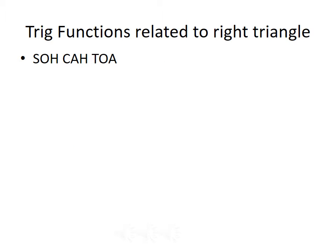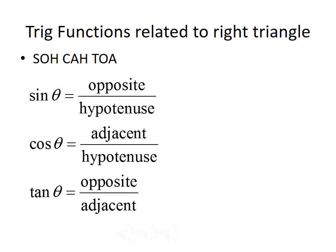Let's talk about the trigonometric functions related to the right triangle. To remember the trig functions, you can think about the mnemonic SOHCAHTOA. SOHCAHTOA should help you remember that sine of theta is opposite over hypotenuse — SOH. Cosine of theta equals the adjacent side divided by the hypotenuse — CAH. And tangent of theta is equal to opposite over adjacent — TOA.